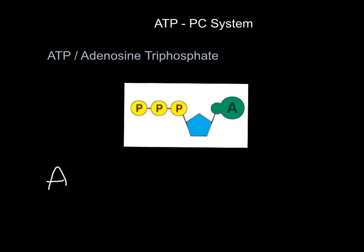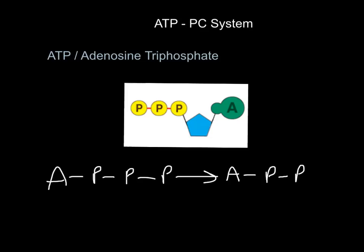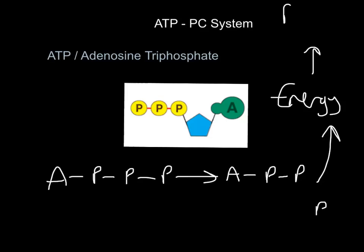Where does energy for muscular contractions come from? We've got ATP with three phosphates attached. What's going to happen is one of the phosphates is going to break off on its own, and that is going to release energy. That energy is used to power the muscles. So every time you want to contract a muscle, that third phosphate splits off, releases energy, and powers the contractions.